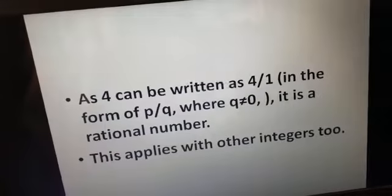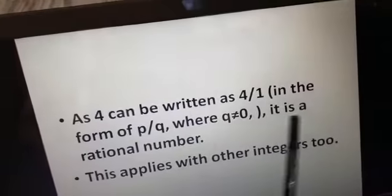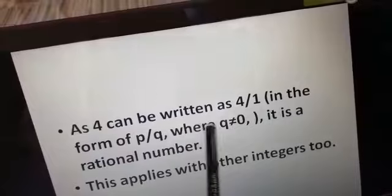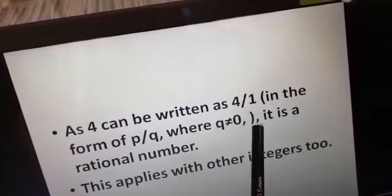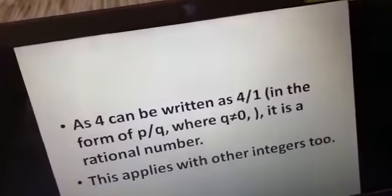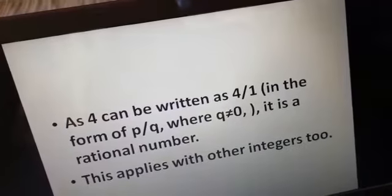As 4 can be written as 4 by 1, that is in the form of P by Q, where Q, the denominator, is not equal to 0, it is a rational number. This applies to other integers too.